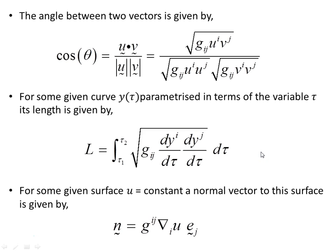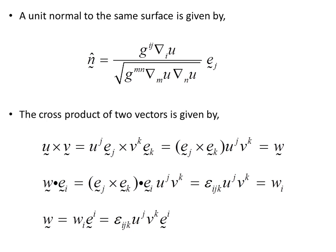Now let's have a look at normal vectors. For a given surface u = constant, a normal vector to the surface is given by the gradient del(u). If we want a unit normal to the same surface, we divide by the norm of del(u) — giving us a unit vector perpendicular to the surface.